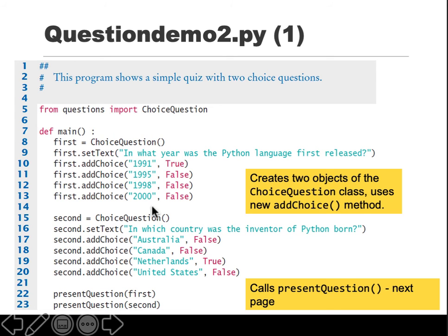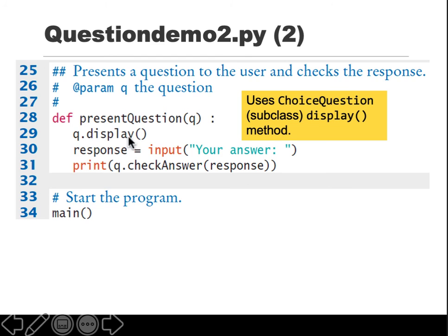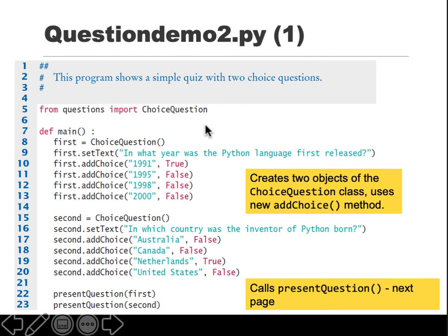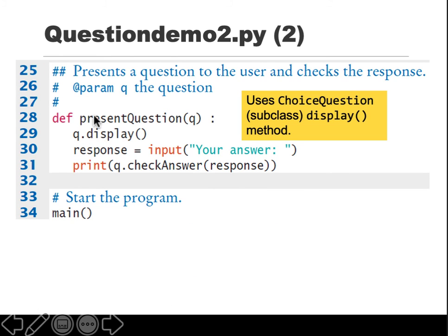Then you create another question, again do the same thing with text, etc. Then presentQuestion first. Let's see what presentQuestion is. It's accepting an object, queue let's say. What are we passing? We pass the whole object that we created. Why? Because then you can use this object dot call the function.